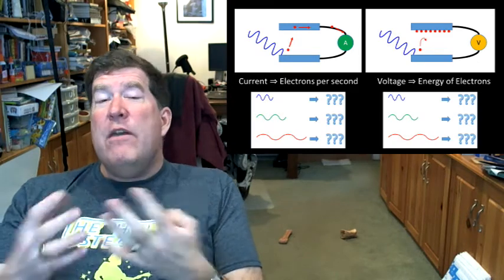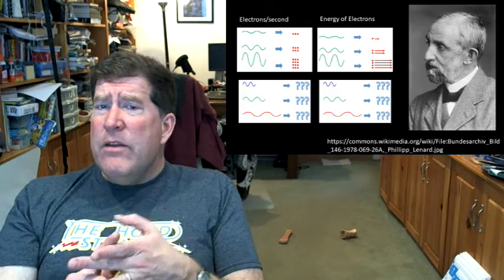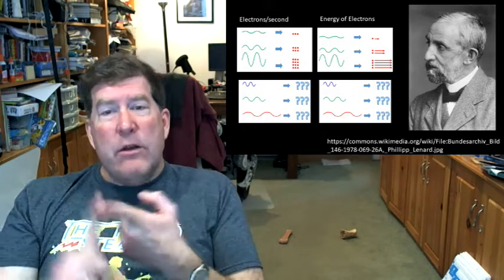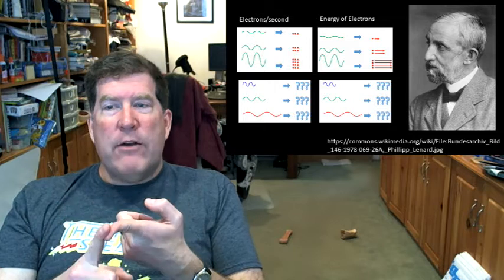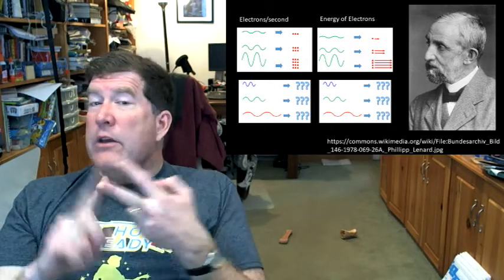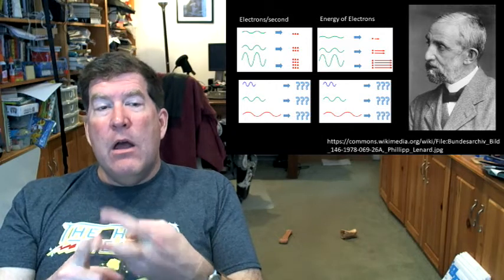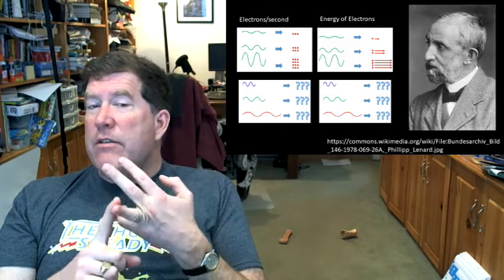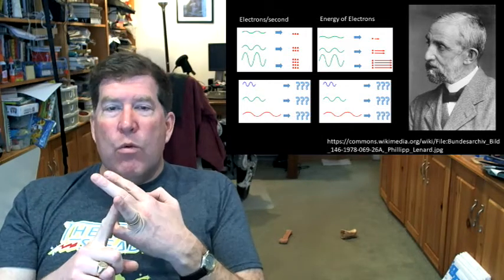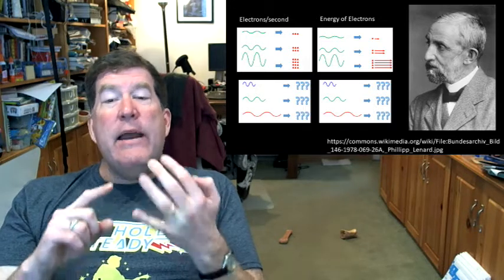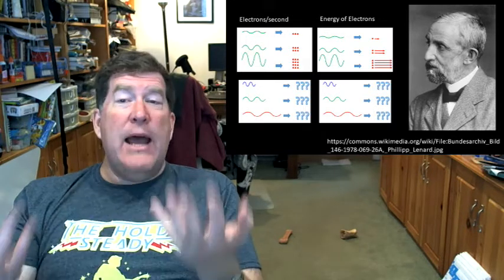So we have this sort of grid of combinations of experimental parameters and types of experimental measurements that gives us these four possibilities. Our conclusions are as we increase the intensity, we should get more electrons per second. As we increase the intensity, we should get higher energy electrons coming out. As we increase the frequency, we're not sure what's going to happen.